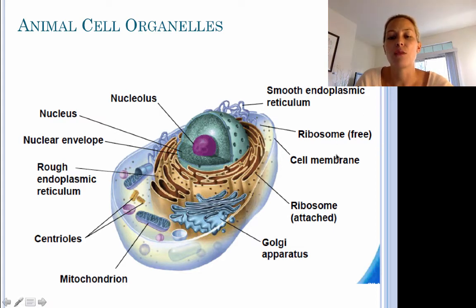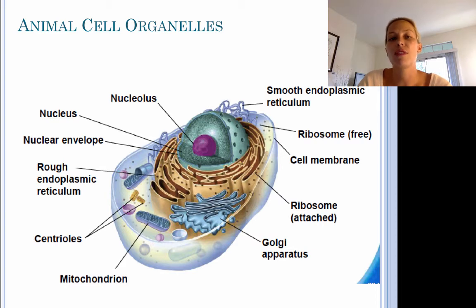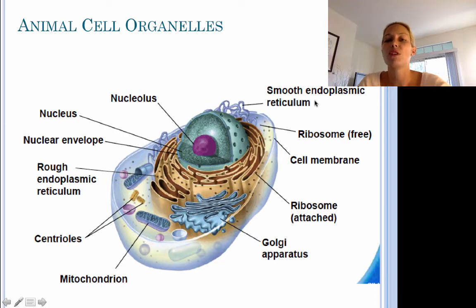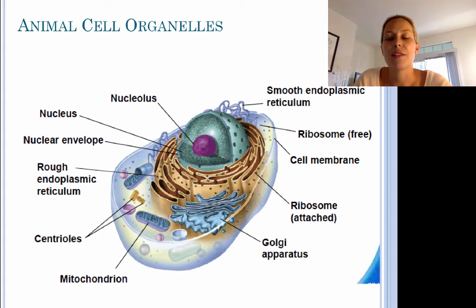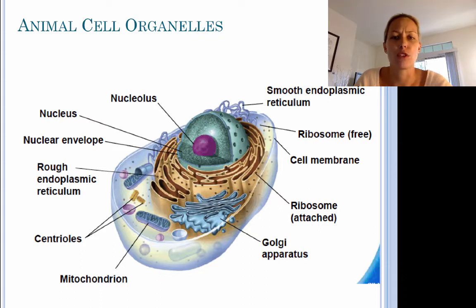We're going to spend more time talking about the cell membrane. In addition to ribosomes being found on the endoplasmic reticulum, they can also be found freely floating in the cytoplasm. And last but not least, we have the smooth endoplasmic reticulum, which is responsible for the production of lipids or membrane lipids and detoxification of different substances that might enter the cell.